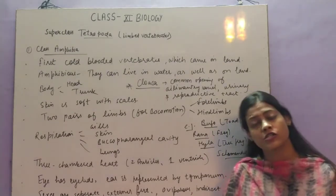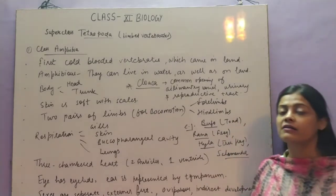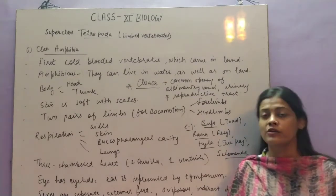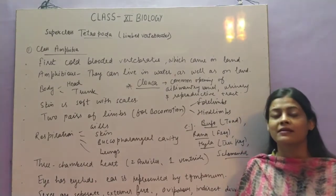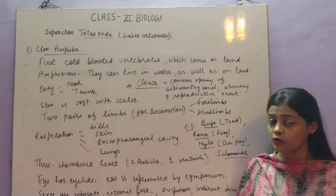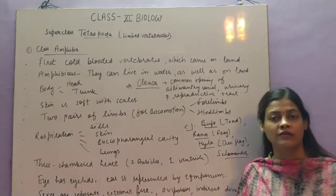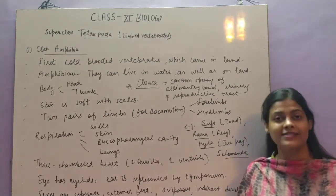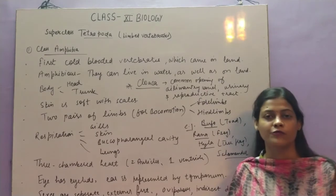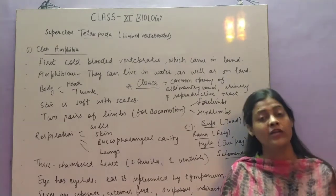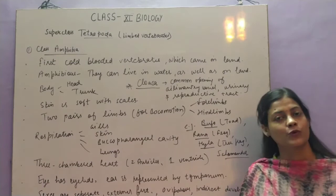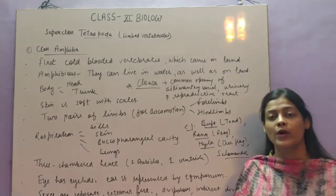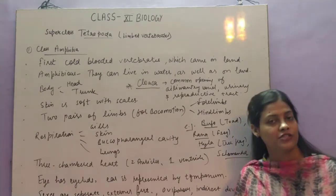Amphibia were the first cold-blooded organisms to come onto land for the first time. All aquatic organisms are cold-blooded and live in water only, but Amphibia were the first cold-blooded organisms to come out of water and live on land. This gives them important significance from an evolutionary point of view — it shows how aquatic organisms gave rise to terrestrial organisms.